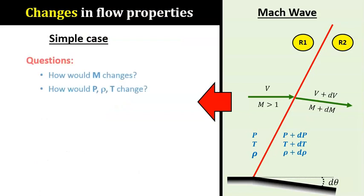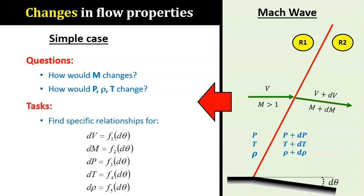The main question to ask in our analysis of the flow is this: How would the flow properties change across the Mach wave? Our task is to find specific mathematical relationships between these flow parameters and the geometry of the deflection. The changes in the flow are mathematically labeled as dV, dM, dP, dT, and dρ, which means that these are small changes and can be either positive or negative.